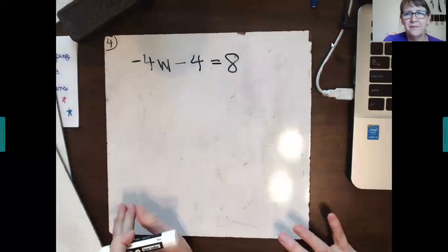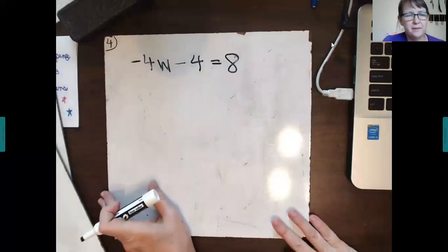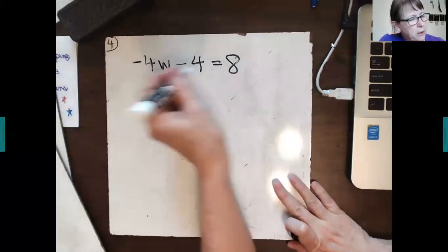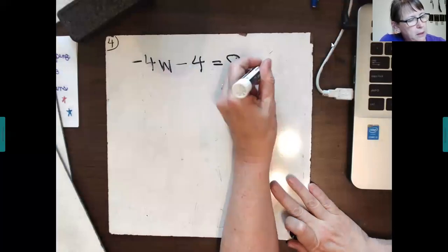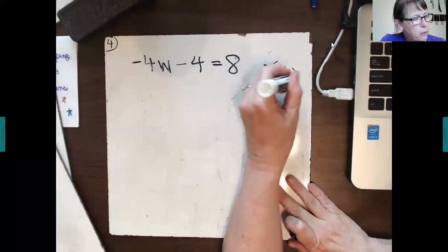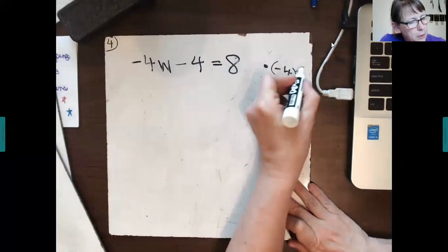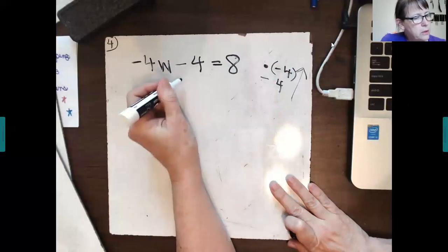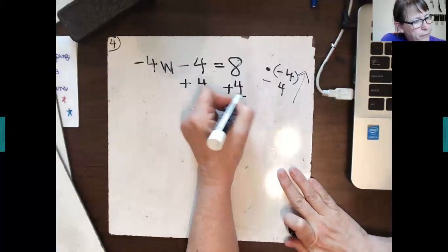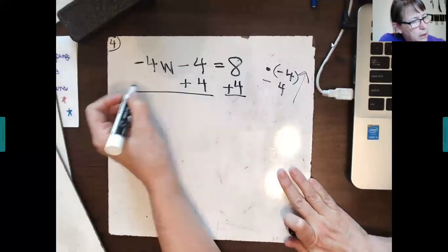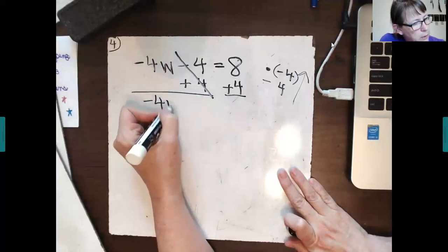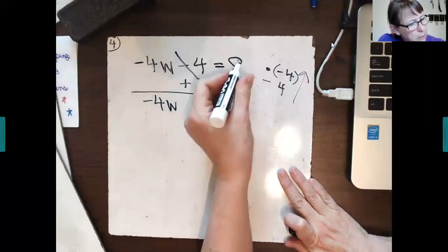Pause the video and try this one. Okay. Now, let's try it. What's being done to W? It's being multiplied by negative 4 and subtracted by 4. We're going to do the opposite operation in reverse order. So, instead of subtract 4, we're going to add 4 to each side. These are opposites, so they cancel to 0. Copy the negative 4W equals 8 plus 4 is 12.